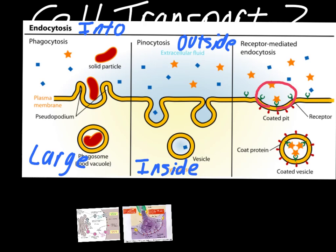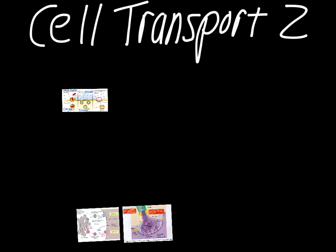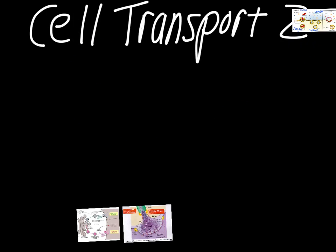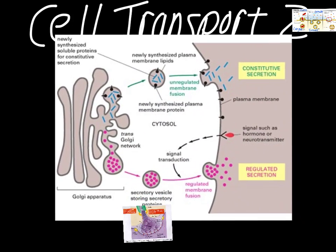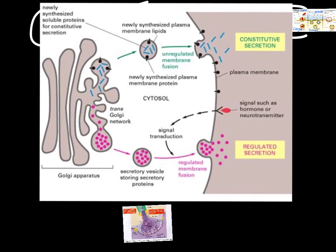So there are three different ways cells bring things in: phagocytosis for large things, pinocytosis for smaller things, and receptor-mediated endocytosis for something specific. The next process we're going to talk about is how the cell gets rid of stuff. As you can probably imagine, the name here is exocytosis. If endocytosis was bringing things in, exocytosis is sending stuff out.